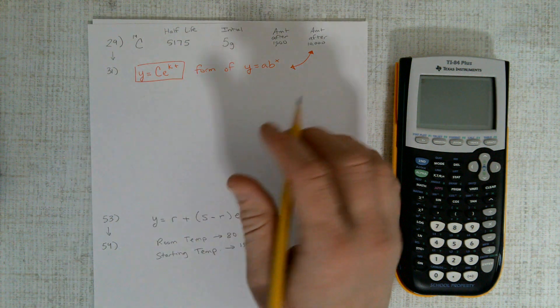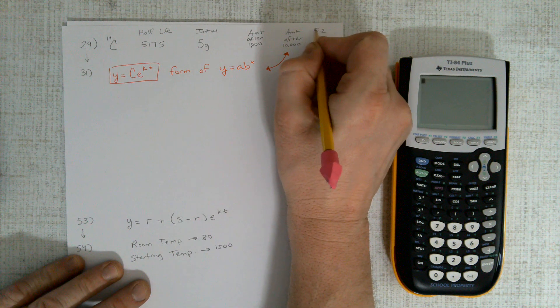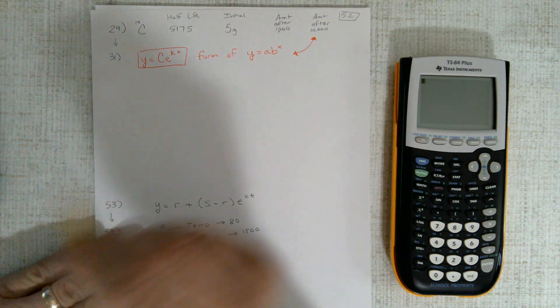All right, hello everyone, this is Mr. Crozier, and these are homework questions from section 5.2. I only had a couple of them, so here we go.